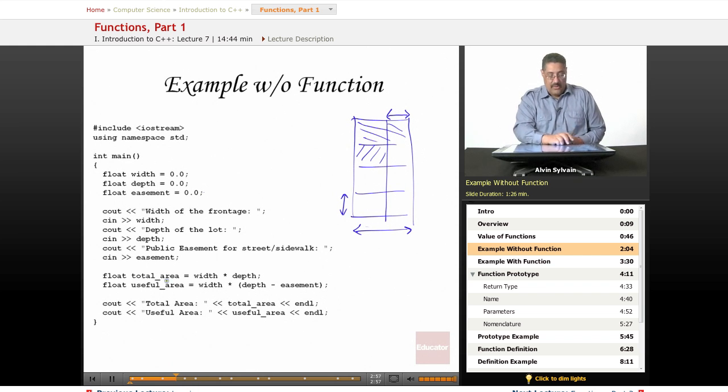So the total area of what you're paying for is the width times the depth. The useful area is the width times the depth minus your easement. And so we print that out, total area and the useful area.